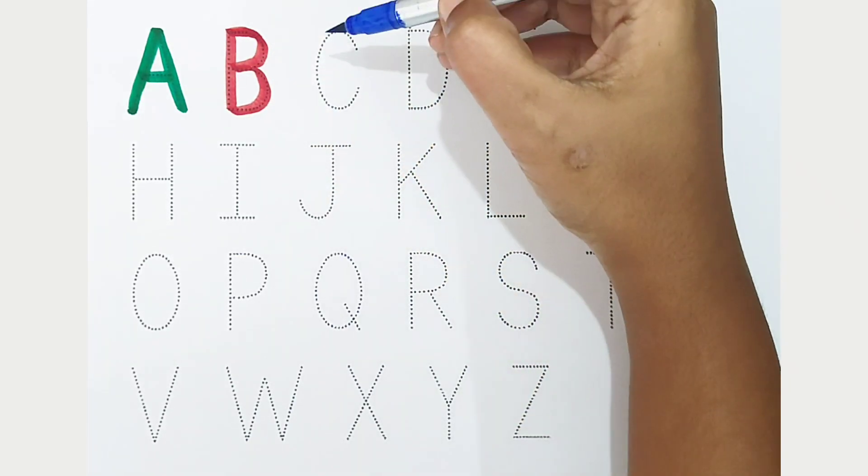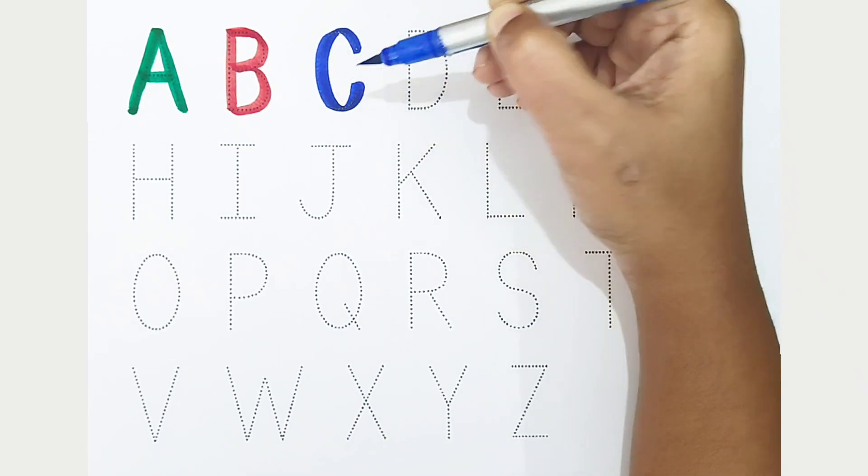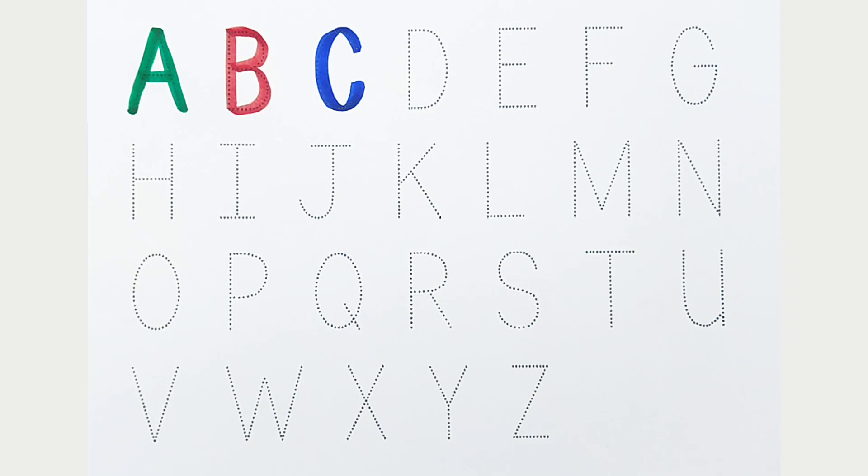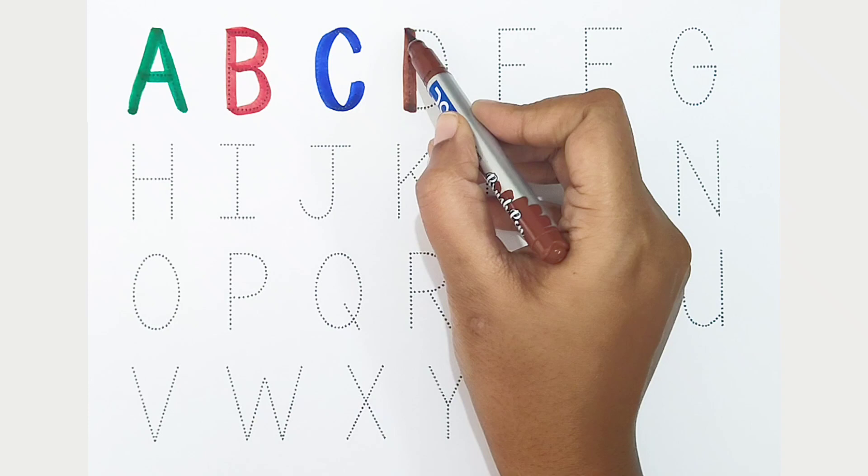C, dark blue color. C is for camel. D, brown color. D is for donkey.